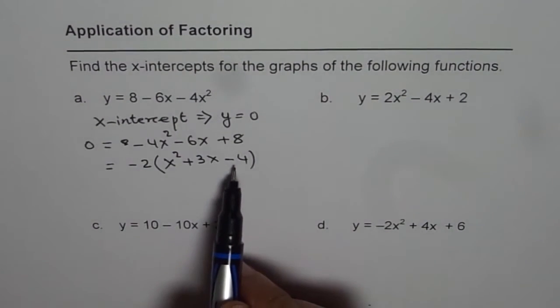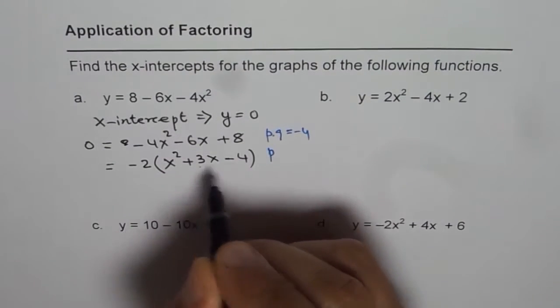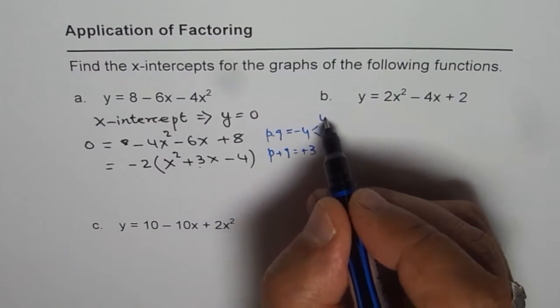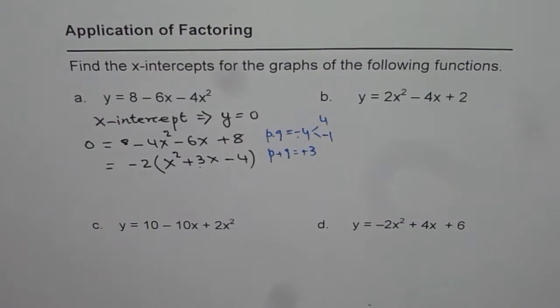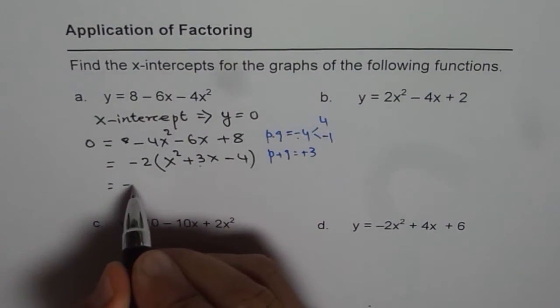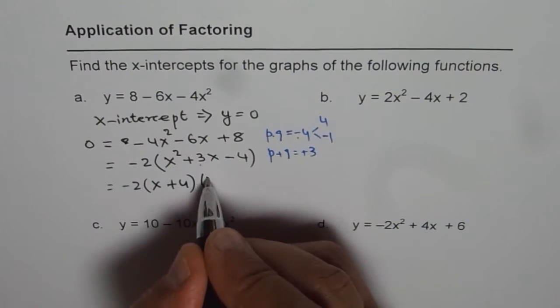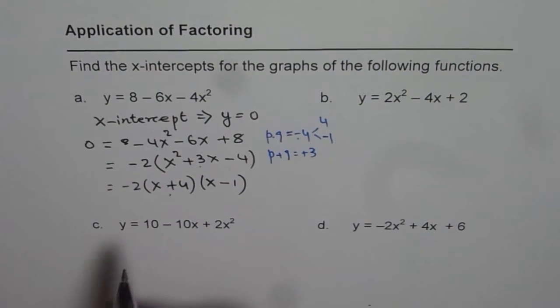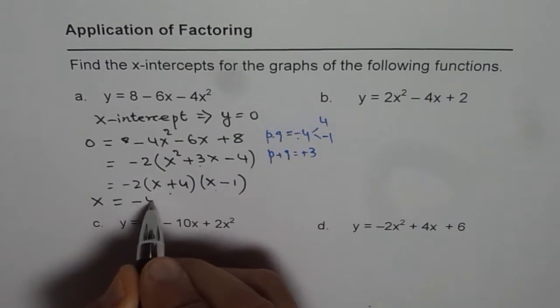Now, we are looking for a product of two numbers whose product is minus 4, and the sum should be plus 3. Two numbers should be 4 and minus 1. Opposite signs, we want product as negative. Positive sum means higher number is positive. So we get this as minus 2 times x plus 4 times x minus 1. Now, the right side is 0 for x equals to minus 4 or for x equals to plus 1. So these are the two x values. So x will be minus 4 or plus 1.